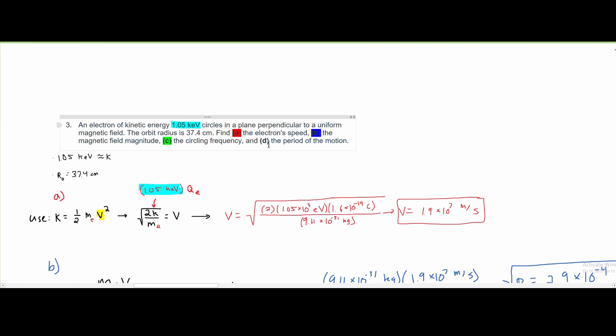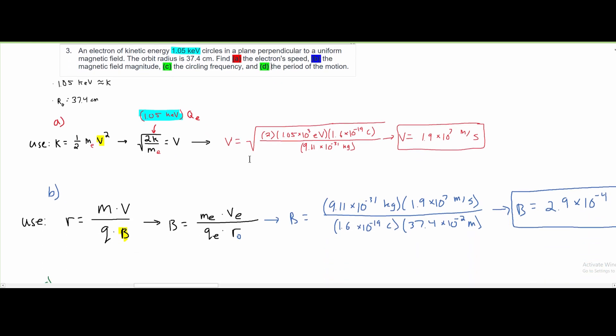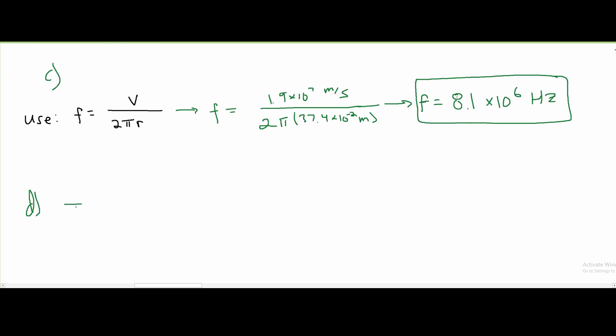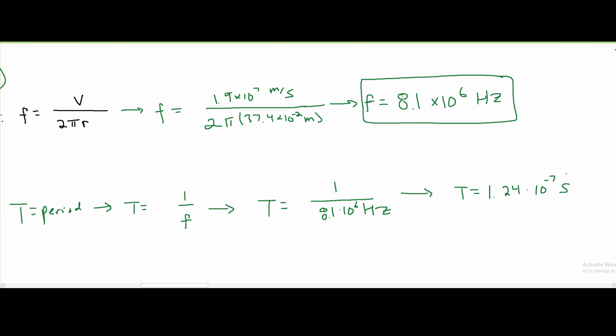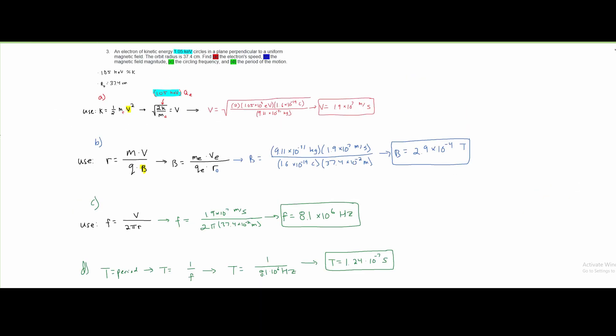Part D is just asking us to find the period of motion. Well, period is T. This represents period. And T is equivalent to 1 over f with f being frequency. Well, we know our f. So what we can do is just say T equals 1 over 8.1 times 10⁶ hertz. And after we plug this into our calculator, you're going to get 1.24 times 10⁻⁷. And this is going to be period. So it is measured in seconds. This is the answer for part D. And this is the work for the entire question of part three.